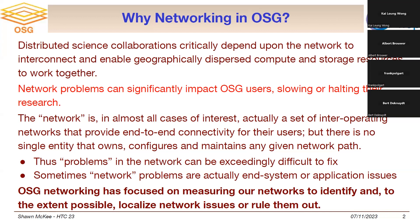When you say 'the network,' you have to be careful because the network is actually a complex entity. There are various networks that have to interoperate in the typical case to get the user from source to destination. This makes problems in the network a very big challenge because you need to know exactly what the problem is and ideally where it is to get it solved quickly. Sometimes people blame the network when it's actually the end systems, so you have to quickly differentiate problems on the ends versus something happening in the middle.